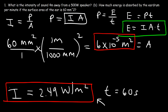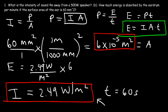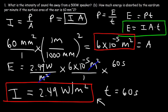Now we have everything needed to calculate the energy. The energy equals the intensity of 2.49 watts per square meter multiplied by the area of 6 × 10⁻⁵ square meters multiplied by 60 seconds. The square meter units cancel, so it's 2.49 × 6 × 10⁻⁵ × 60, which gives 8.96 × 10⁻³ joules.